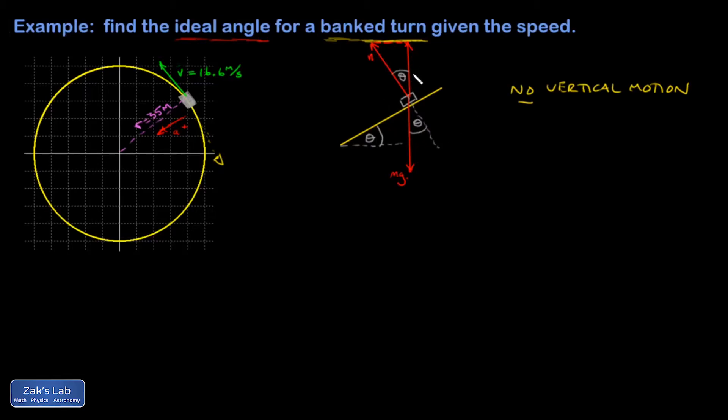And so this upward component, I'm going to go ahead and try to color code in my traditional way. This upward component is going to be n times the cosine of theta. So that n times the cosine of theta is what's holding you up against the force of gravity.